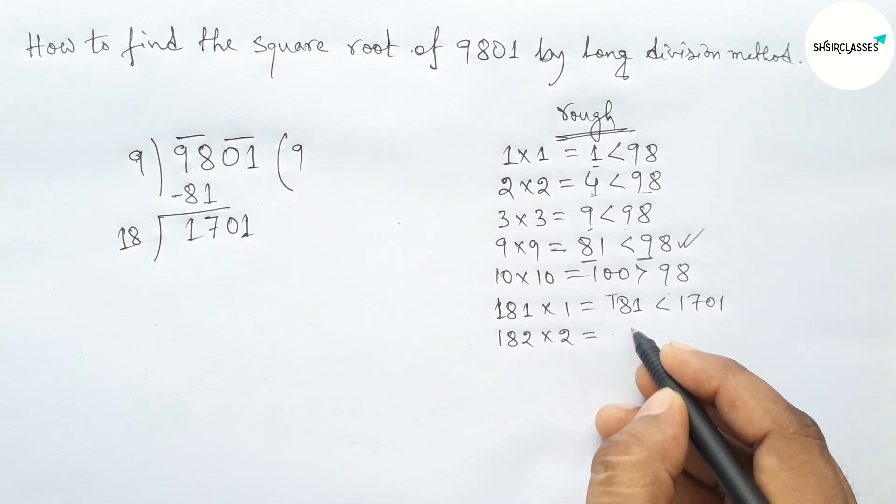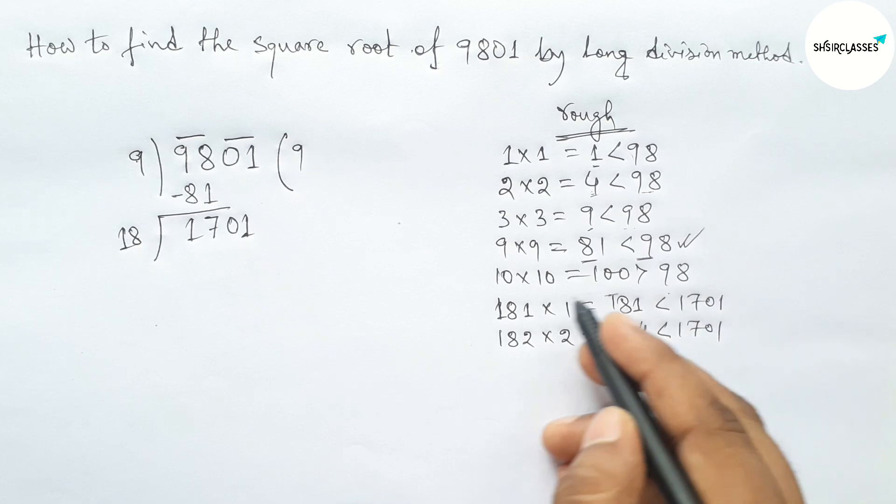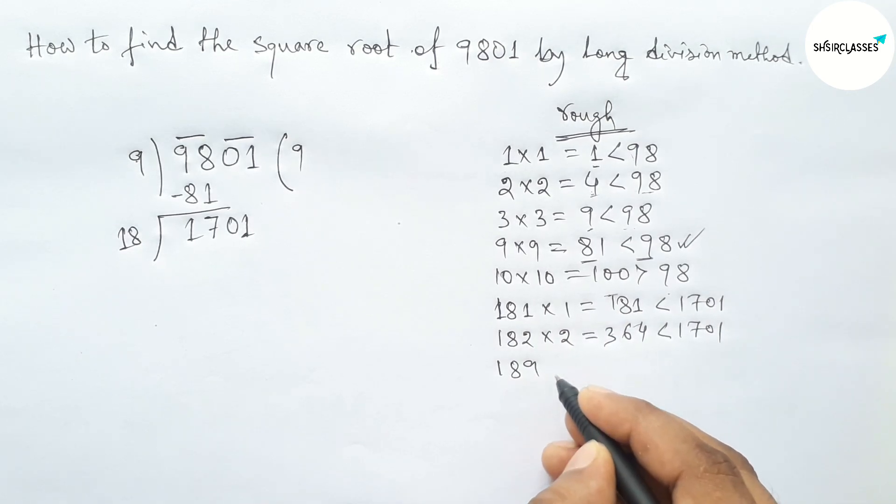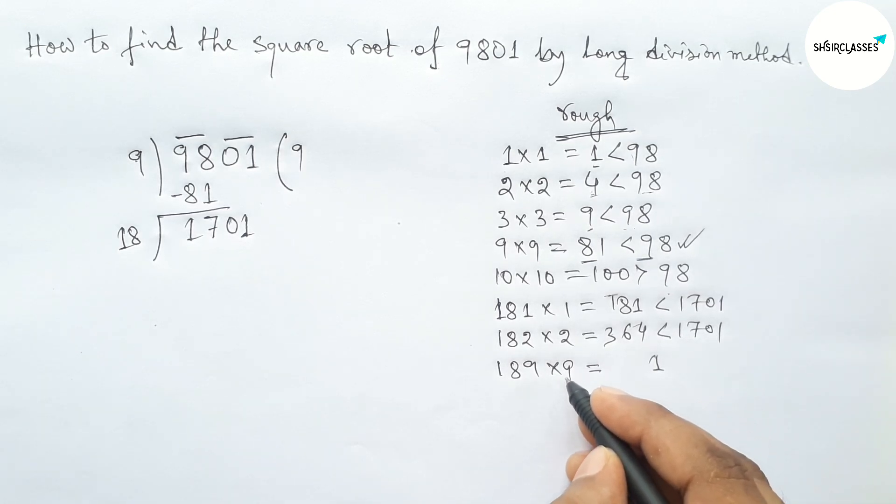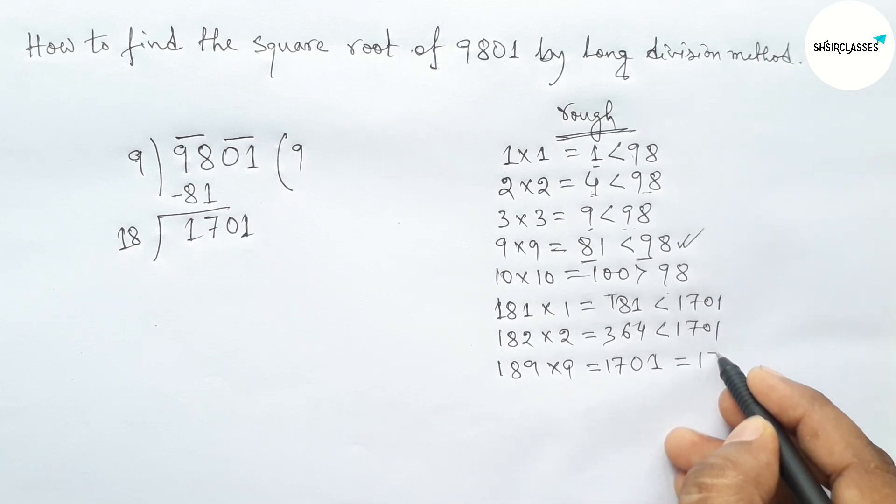So all these cases are not more closer to 1701. So directly taking here 9 and multiplying by 9, so 189 times 9 equals 1701. So this is equal with 1701.